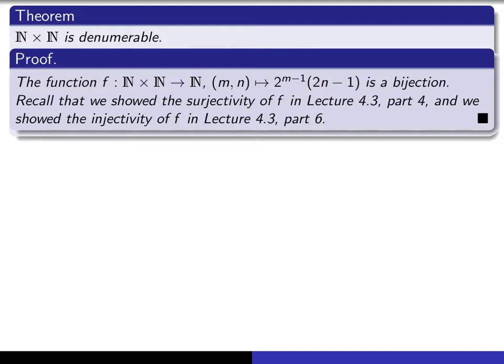We proved that that function was surjective in this particular lecture, and we proved that it was injective in this particular lecture. So there you have it. There's a bijection from this set to this set, and therefore n cross n is, by definition, denumerable.